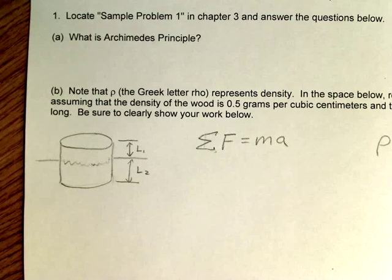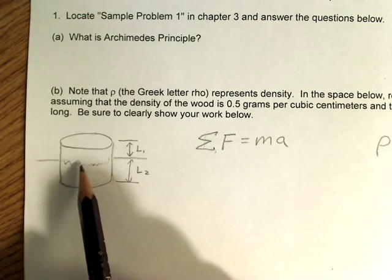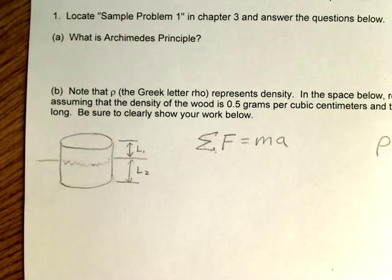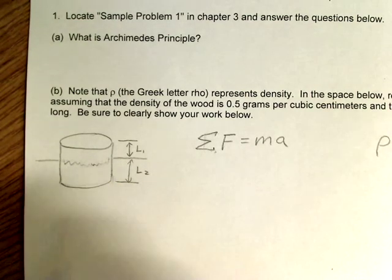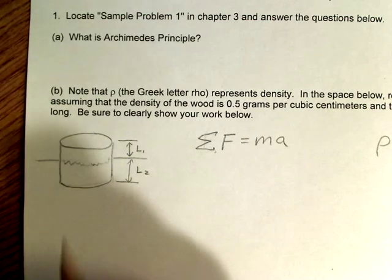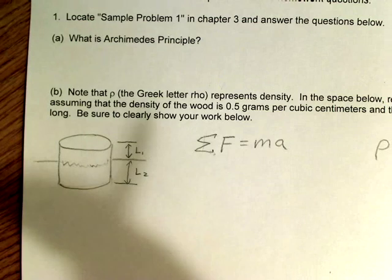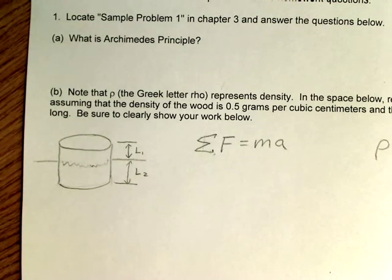It states that the buoyant force upward on a floating body is equal to the weight of the water that was displaced. So when you have something sitting in the water it pushes water out of the way. If you take that amount of water that got pushed out of the way and you weigh it, that is equivalent to the buoyant force upward.